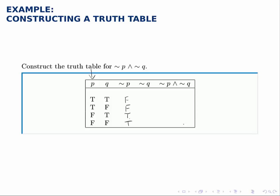For not Q, we do the same thing except now we look at the Q column and negate each of those. So the true in the first row would become false, the false becomes true, true becomes false, false becomes true.